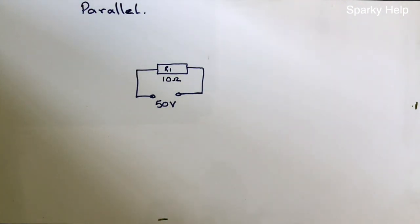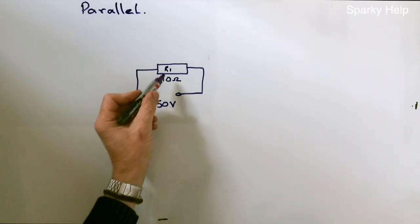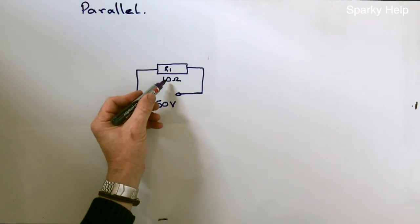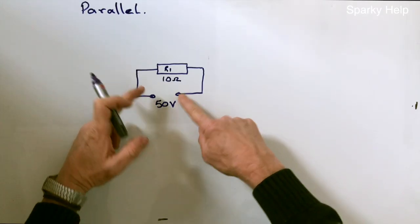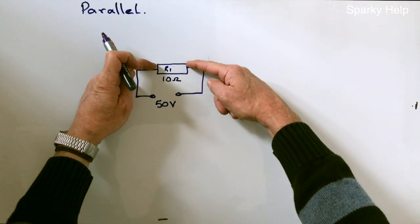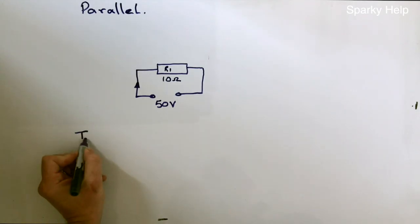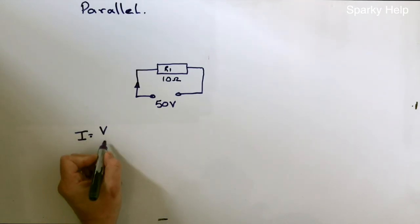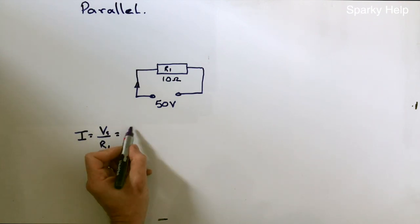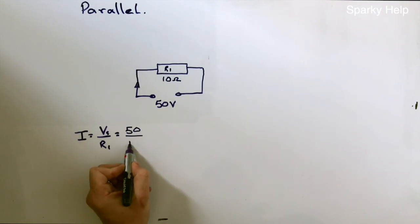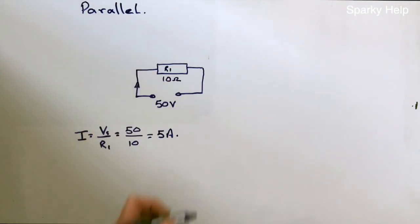Okay, parallel circuits — how do we work these out? Let's take the simple circuit here, which is one resistor, one voltage source, 10 ohms. If I was to get a voltmeter and put it there, I would measure 50 volts. If I put the voltmeter there, I'll also measure 50 volts. So the current flow, by Ohm's law, would be V over R — in this case Vs over R1. So simple maths: we know we would get 5 amps flowing around in this circuit.